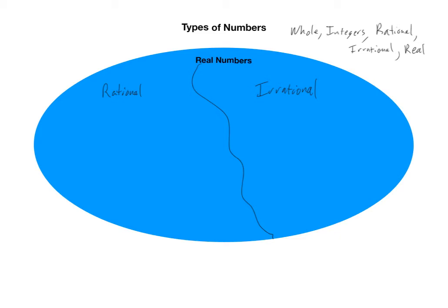Most of our work is going to be done in the rational real number world, not so much in the irrational real number world. For example, pi and root 2 are two examples of irrational numbers — they play a very important role. If we were studying circles we'd see pi; if we were talking about diagonals of squares we'd see root 2. But that's not part of this course.